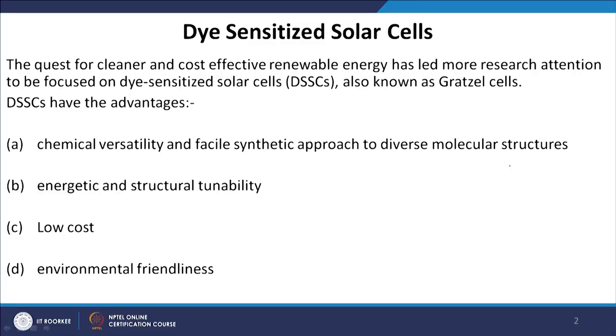The second point is energetic and structural tunability. Depending on which region of the electromagnetic spectrum we want our dye to absorb sunlight, we can engineer the band gap accordingly and choose the material accordingly. So we have freedom in the choice of material according to their band gap and structural properties.